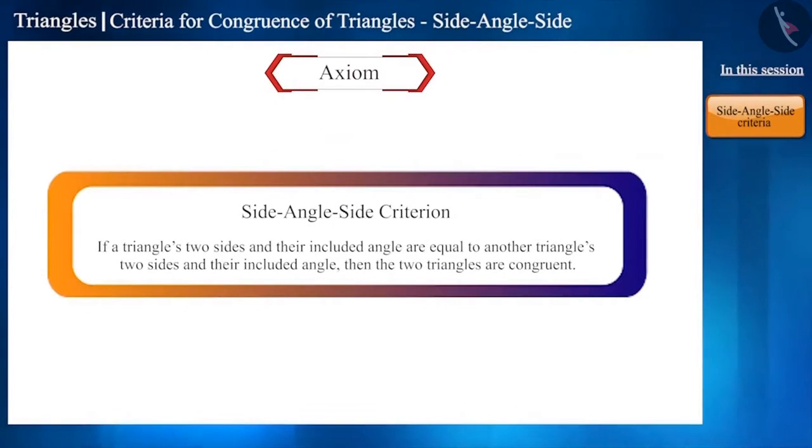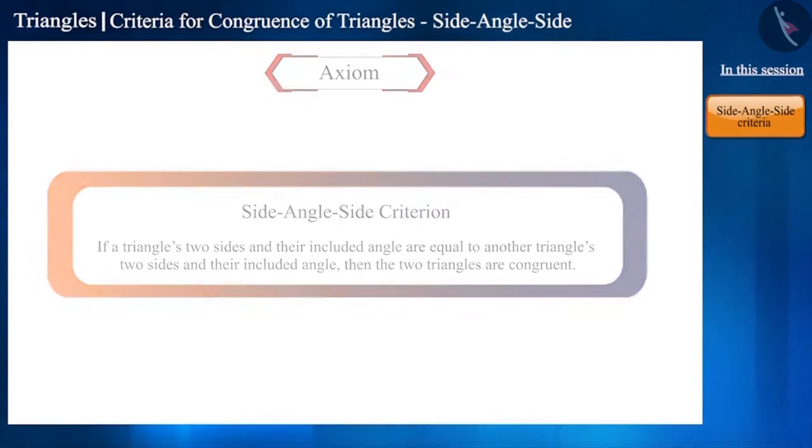The SAS congruence rule cannot be proved with the help of previously known results. Therefore, it is accepted as true in the form of an axiom.